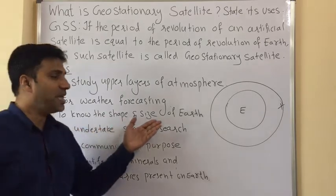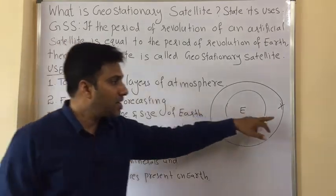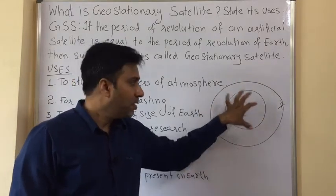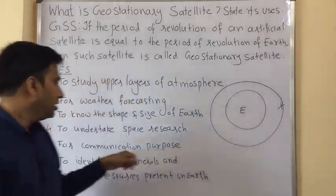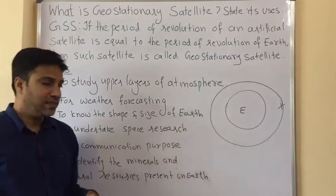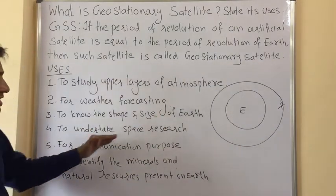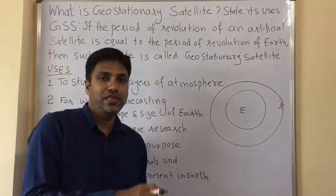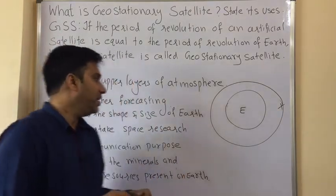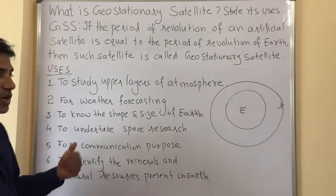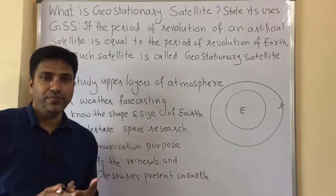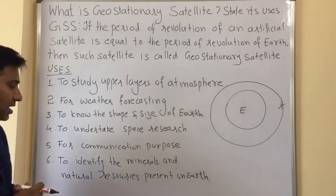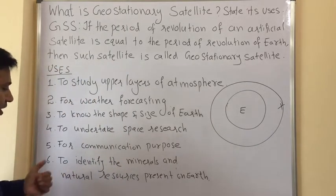The next use is to know the shape and size of earth — as the satellite revolves around the earth, it can easily take pictures of the earth. Also, to undertake space research and to study what is present in space in detail. Additionally, these satellites are used for communication purposes, for television, and for any other mode of communication.